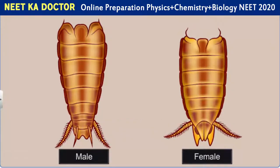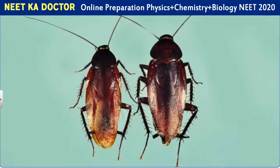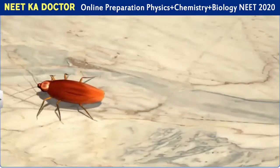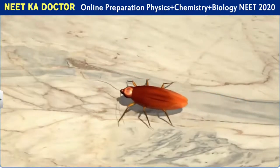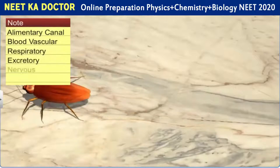Additionally, male cockroaches bear a pair of short anal styles which are absent in females. These features help distinguish between a male and a female cockroach. The morphological study of a cockroach includes features such as its color, shape, size and external organs. Although a cockroach may look like a simple small insect, anatomically it is quite complex. Let's take a look at the anatomical features of a cockroach such as the alimentary canal and the blood vascular, respiratory, excretory, nervous and reproductive systems.